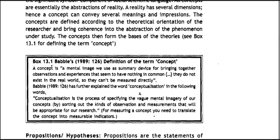Box 13.1 defines the term concept: a concept is a mental image we use as a summary device for bringing together observations and experiences that seem to have nothing in common. They do not exist in the real world, so they cannot be measured directly. Conceptualization is a process of specifying the vague mental image of a concept, sorting out the kinds of observations and measurements that will be appropriate for our research. For measuring a concept, you need to translate the concept into measurable indicators.